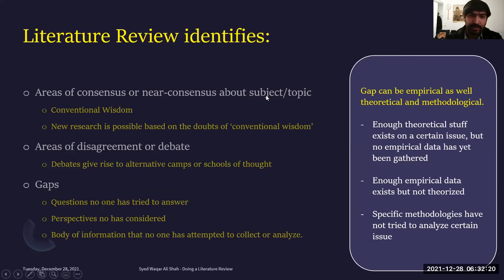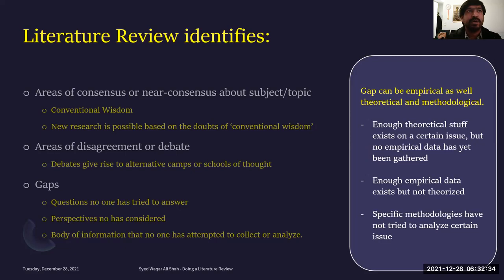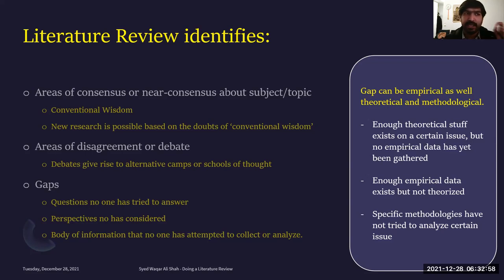When doing a literature review, you have to look at three important points — what does a literature review actually do, and what does it identify? Most researchers, when doing a literature review, just refer to individual separate studies and in each paragraph write about each study separately. But that is not the right way of doing a literature review. If you have studied five research papers and are just summarizing each paper in each paragraph, that may not be a good literature review.